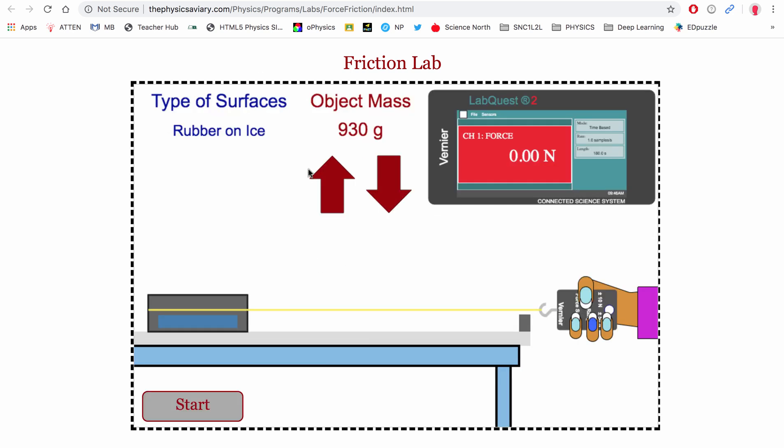First thing I want to do is click on where it says types of surfaces and we can toggle through the different materials that are interacting. I'm going to start with wood on lab table, which is essentially a wooden block that we're going to be dragging along. This is the force sensor. I can toggle the masses, so I'm going to bring it all the way down to 100 grams and click start.